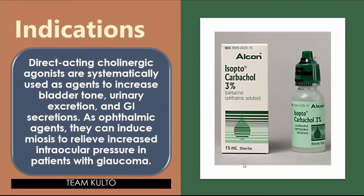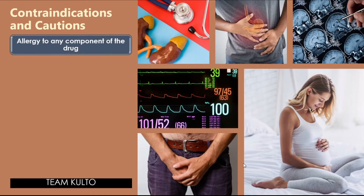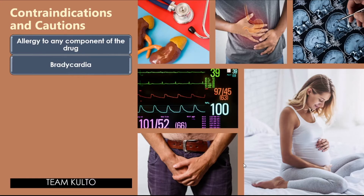Indications: direct acting cholinergic agonists are systemically used as agents to increase bladder tone, urinary excretion, and GI secretions. As ophthalmic agents, they can induce miosis to relieve increased intraocular pressure in patients with glaucoma. Contraindications include allergy to any component of the drug to prevent hypersensitivity reaction, bradycardia, hypotension, vasomotor instability, and coronary artery disease.